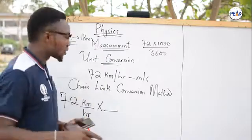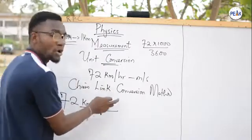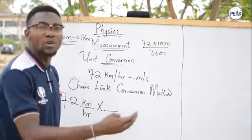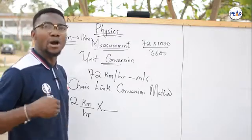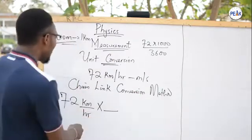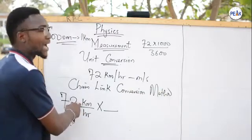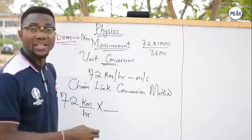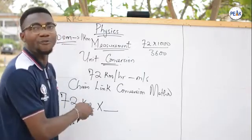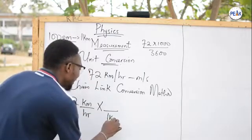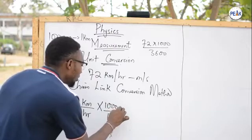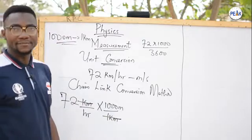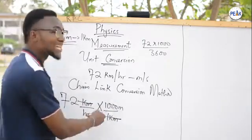In the chain link conversion method, it is compulsory that one part of the relationship is up while the other is down. You place them so that where you are coming from — your source — cancels out, and where you are going — your destination — comes into being. To cancel out kilometers, I place kilometers at the denominator, so I have: 1 kilometer = 1000 meters. Kilometer cancels kilometer. Had the question asked for meters per hour, I would stop here.